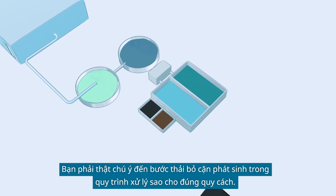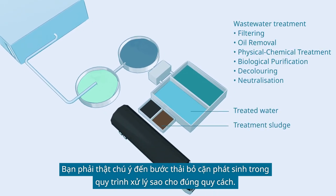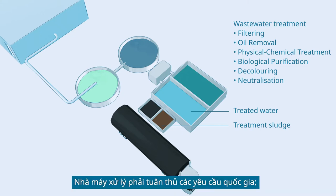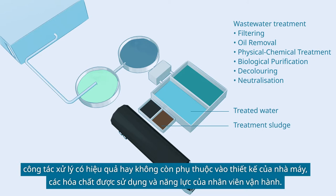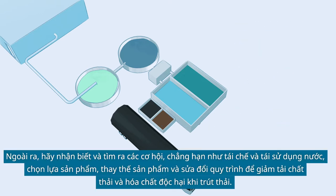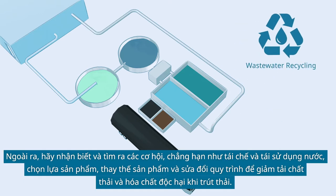You must pay special attention to the proper disposal of the treatment sludge, which is generated during the treatment process. The treatment plant must comply with the national requirements. Good treatment performance depends on plant design, applied chemicals, and the competence of the operating personnel. Also, identify and explore opportunities such as recycling and reuse of water, product selection, product substitution, and process modification, in order to reduce pollutant and toxic chemical loading in discharges.